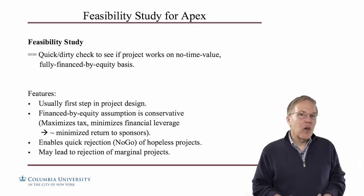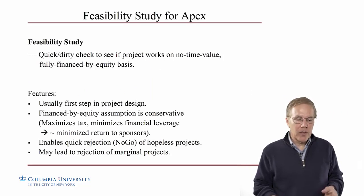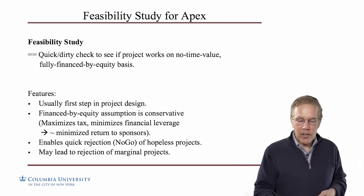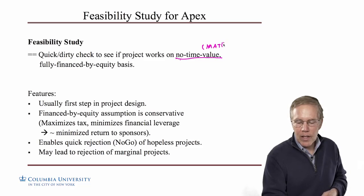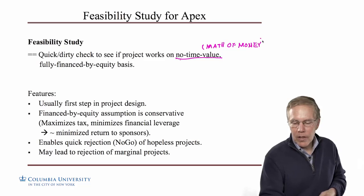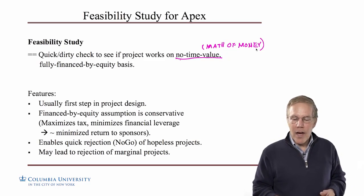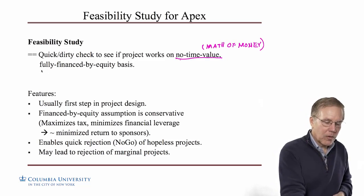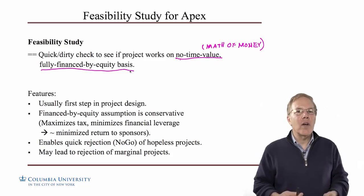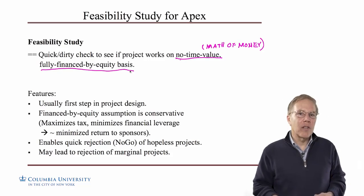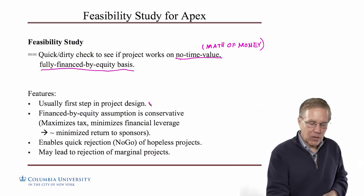So the first thing CAG is going to do is a feasibility study, which is our quick and dirty check to see if this project might work without considering any time value of money. They're also going to do what we call a fully financed by equity basis — meaning the whole project would be financed out of CAG's own funds, without taking out any construction loans or anything else. As I say, this is usually our first step.